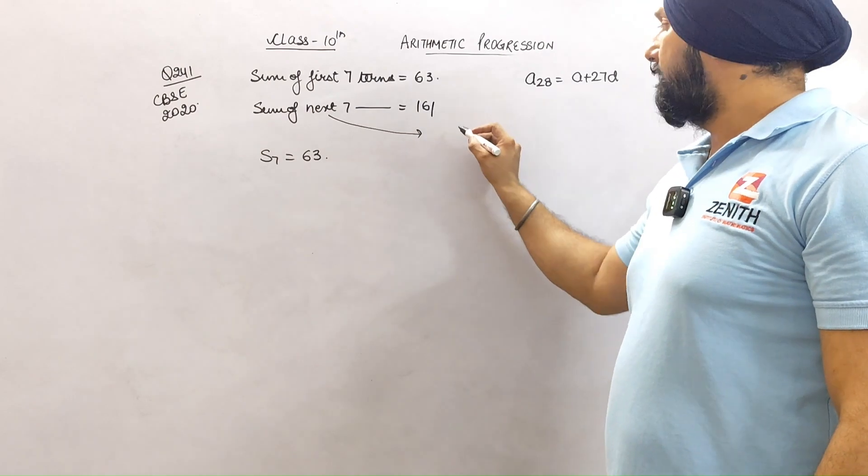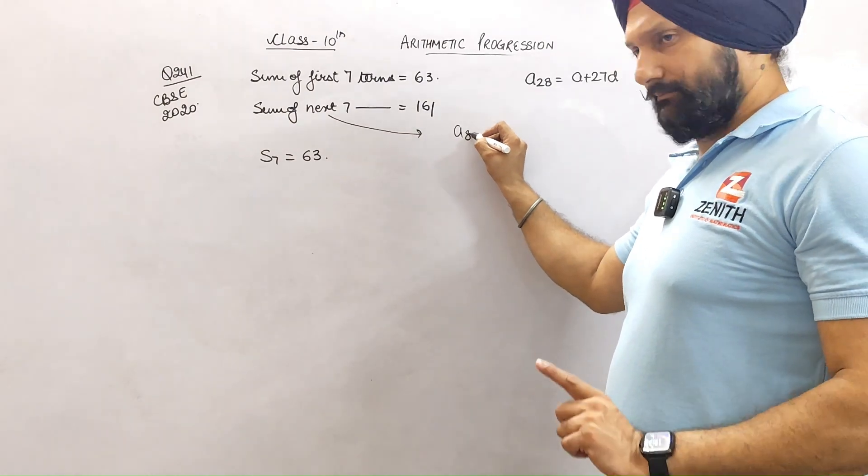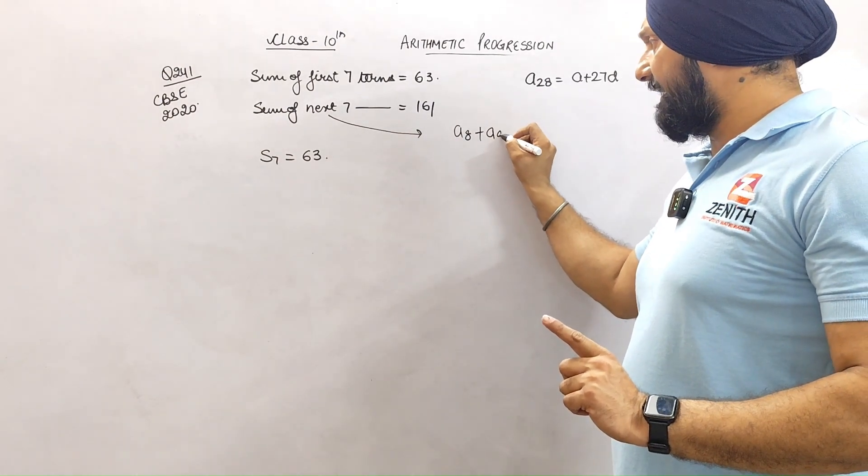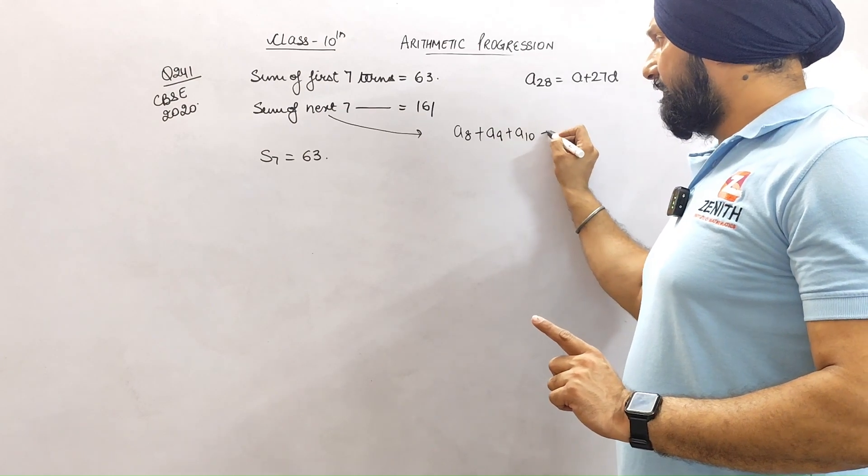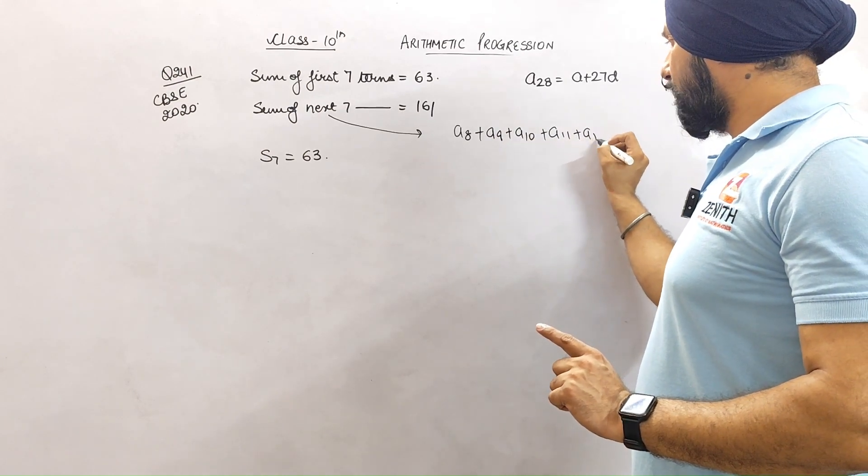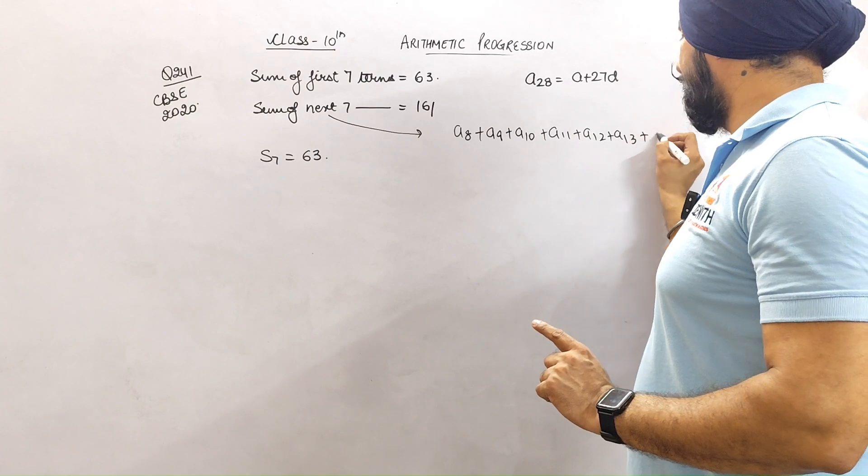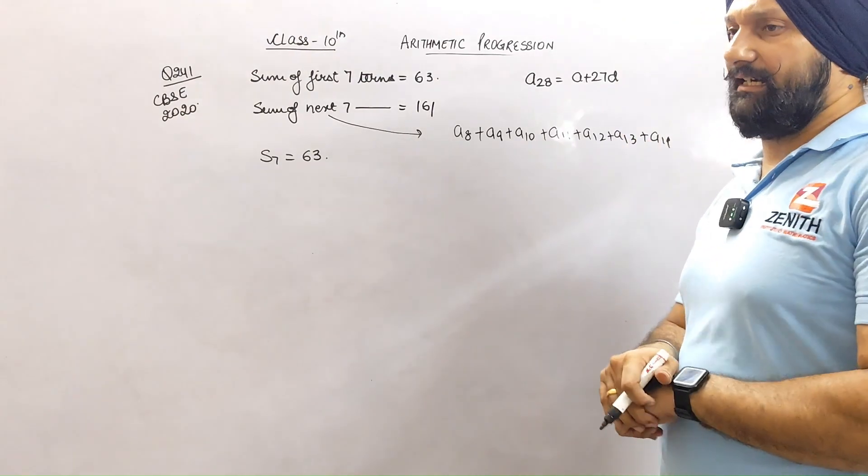So the next seven terms means a8 + a9 + a10 + a11 + a12 + a13 + a14. How do we find this?